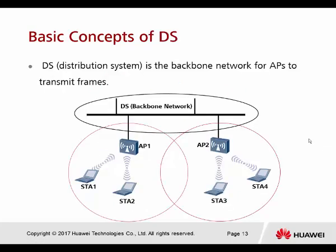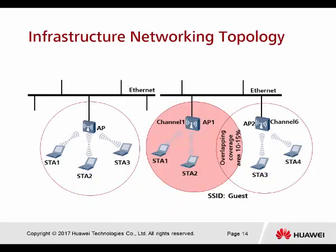The next basic concept is the DS — distribution system. The DS is the uplink connection for all APs, acting as the backbone network for APs to transmit frames. Because at the end of the day, all wireless data still goes back to the wired network. This connection between wireless and wired is what we call the DS. This leads us to the infrastructure networking topology.